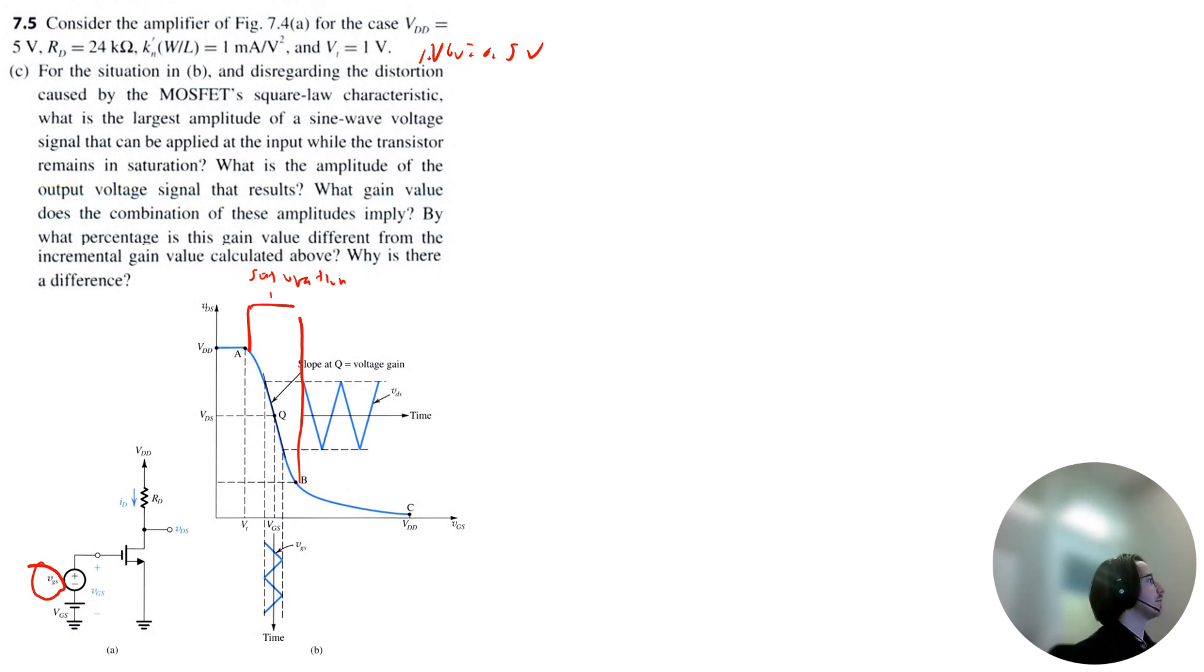So from part A, we calculated this point here. It was VGS at B and that was equal to 1.61 volts. That means the maximum instantaneous input signal that will not take the transistor out of saturation is 1.61 volt. And the corresponding output voltage would be on the Y axis, which was 0.61 volts. In other words, this would be your maximum input. This would be your output for that corresponding input.